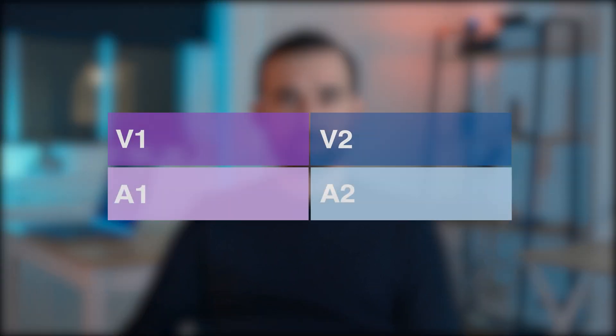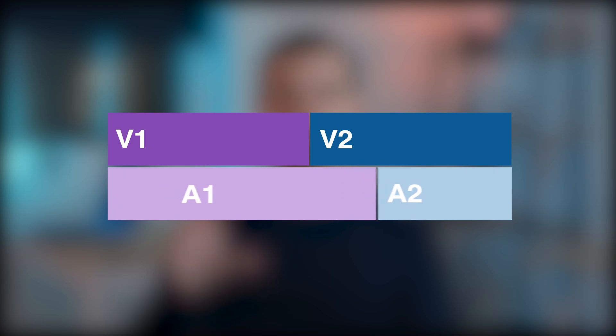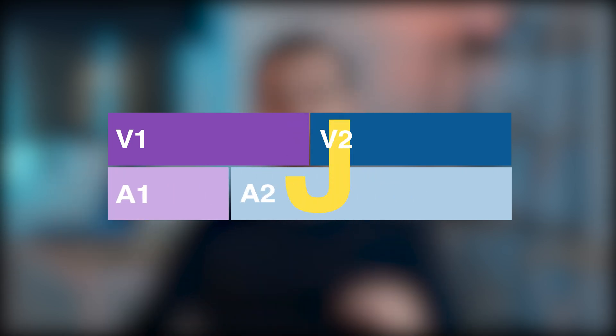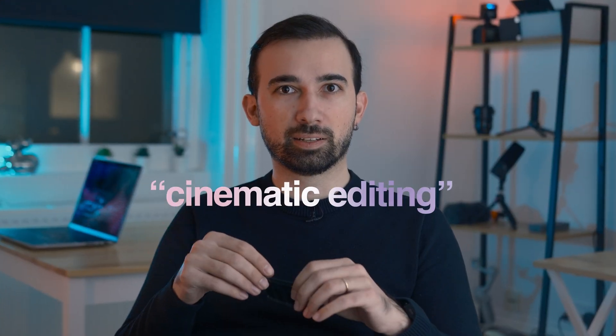You know what is cinematic? L-cut and J-cut. It's when audio continues into the next shot or carries over from the previous one. I love it, it's a great tool to connect scenes. Then let's talk about the characteristics of cinematic editing — not YouTube style. I will give you 10 basic ideas: cinematic cuts.